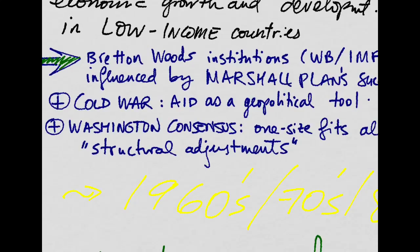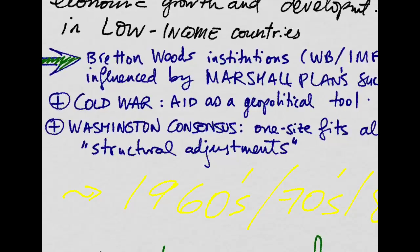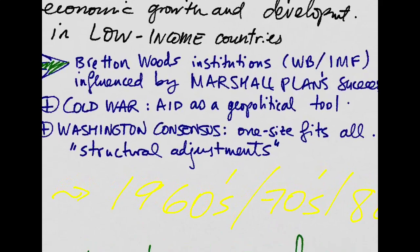Over time, as the Cold War developed, aid was used as a geopolitical tool by Western countries in order to prevent developing countries from shifting towards the Soviet bloc. Then after the end of the Cold War, especially in the late 80s and 90s, there was a shift towards the so-called structural adjustments from the Washington Consensus, which basically designed one-size-fits-all policies for developing countries.